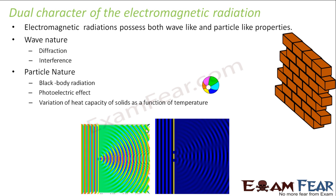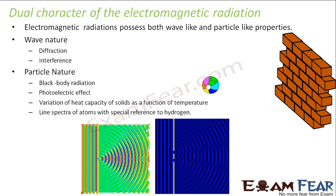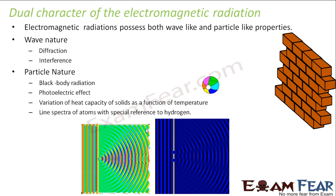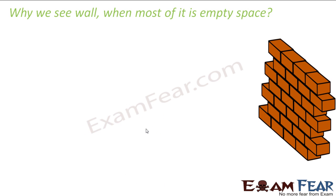So this dual nature of electromagnetic radiation could not be explained by Rutherford's model of atom. Also the line spectra of atoms with special reference to hydrogen falls in the favor of particle nature. So these were some of the things which could not be explained by Rutherford's model.